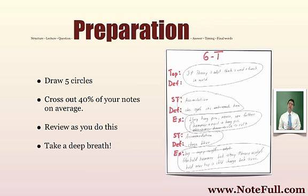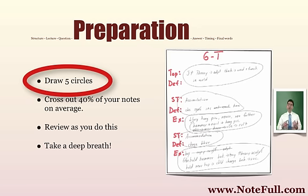To prepare, what you want to do is draw five circles. The first circle is around the topic and the definition, then the first subtopic and its definition, and then the third circle around the example that illustrates it, and then the same thing for the second. A circle around the subtopic and definition, and then a circle around the example. You see it illustrated here from an example from our program.